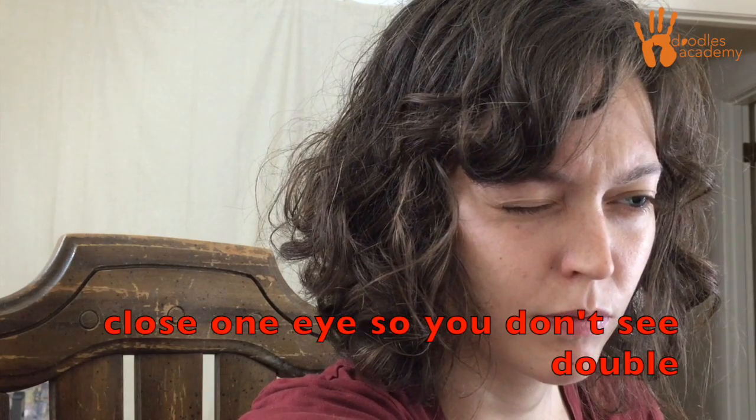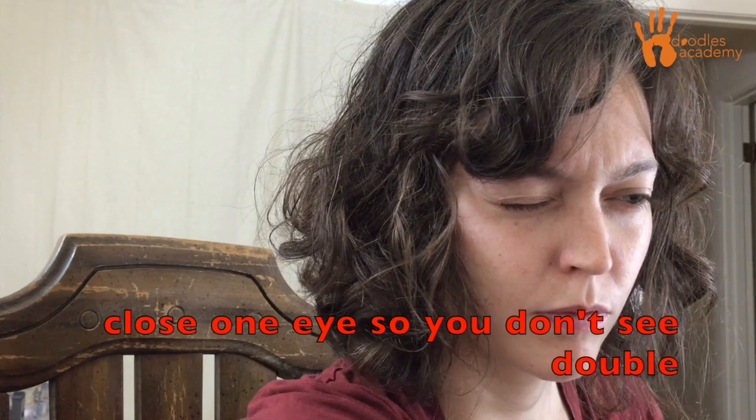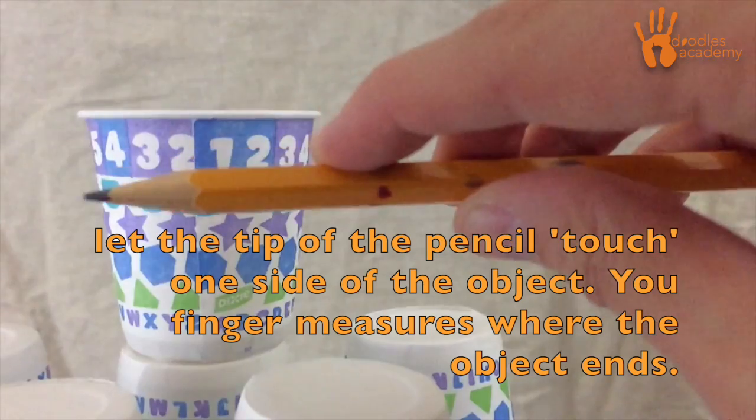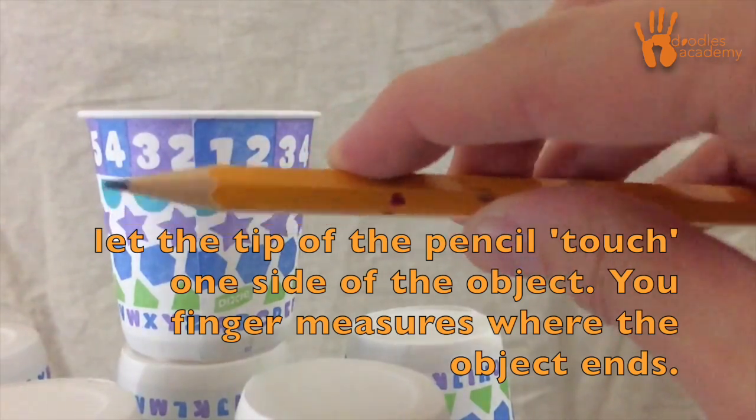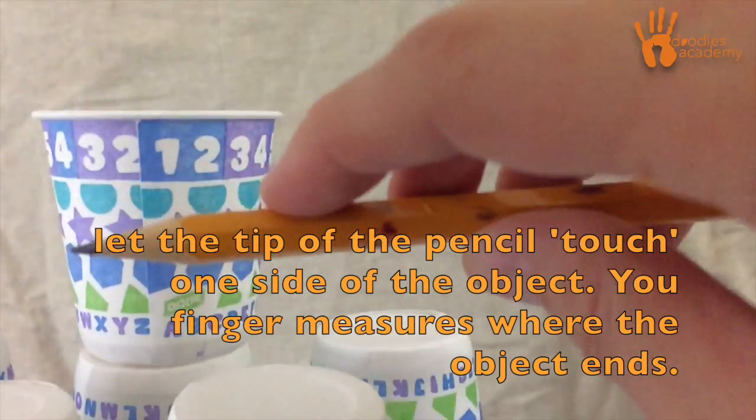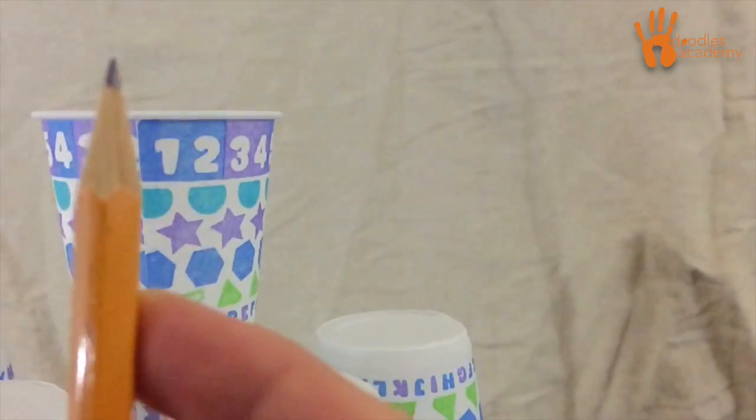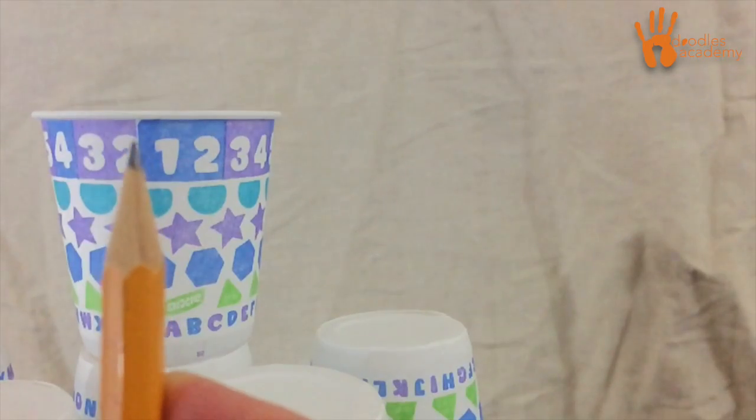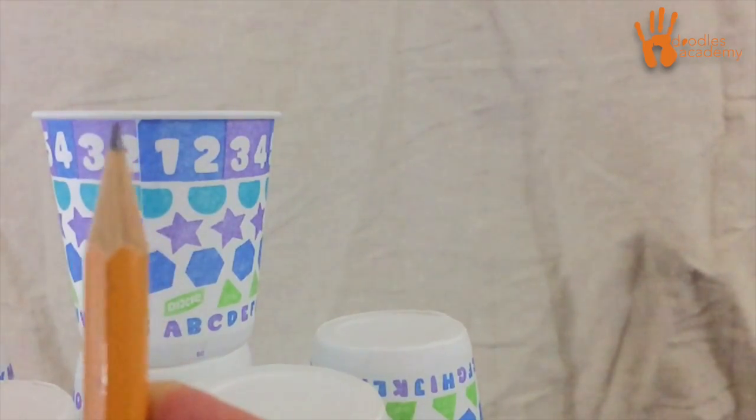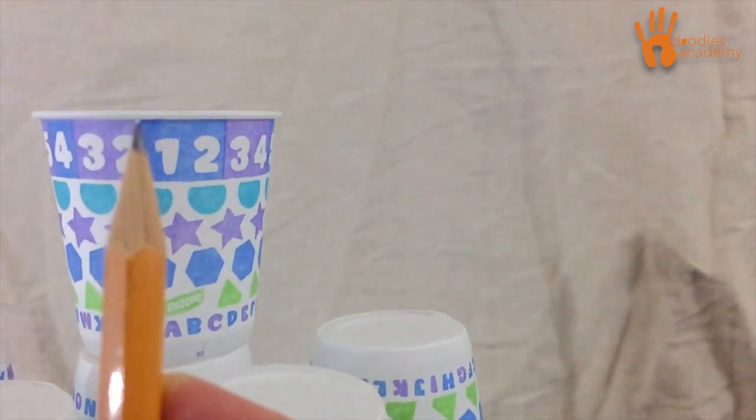Close one eye. This makes it so that you aren't seeing double. Hold your arm out nice and steady and line up the tip of the pencil against the side of what you are measuring. Your pencil is not actually touching the side. It just looks like it is when you close that one eye. Slide your fingers down to mark the other side and then bring your pencil back down to your paper.